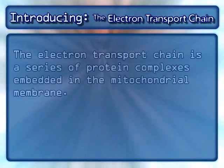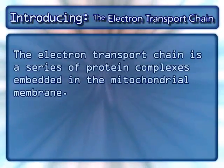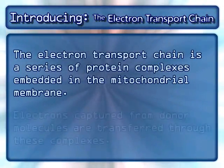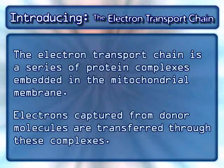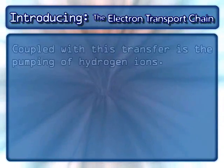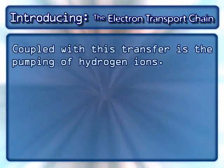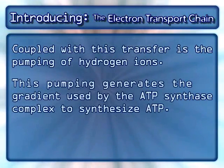The electron transport chain is a series of protein complexes embedded in the mitochondrial membrane. Electrons captured from donor molecules are transferred through these complexes. Coupled with this transfer is the pumping of hydrogen ions, which generates the gradient used by the ATP synthase complex to synthesize ATP.